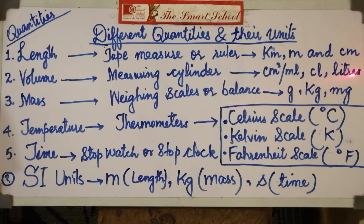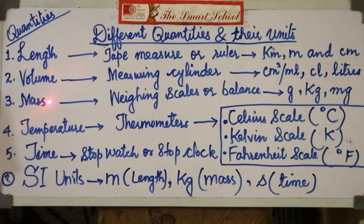The third quantity is mass. Mass is the amount of matter in something. The mass of something can be found by using weighing scales or a balance — these are the instruments used to measure mass. Units of mass are grams, kilograms, and milligrams.